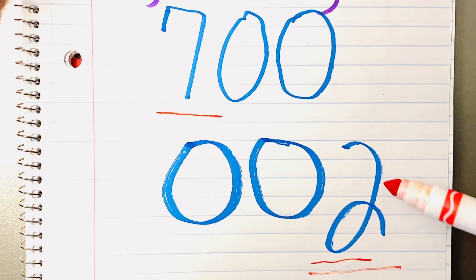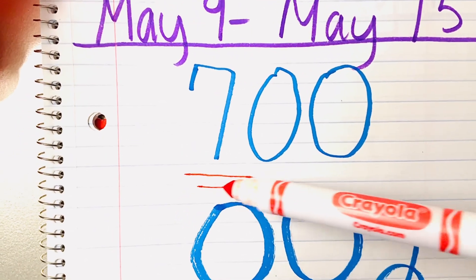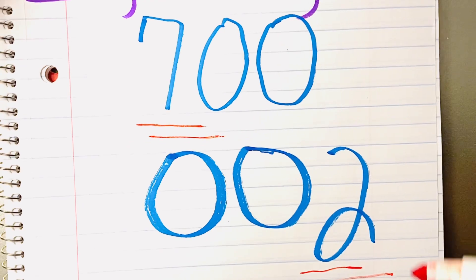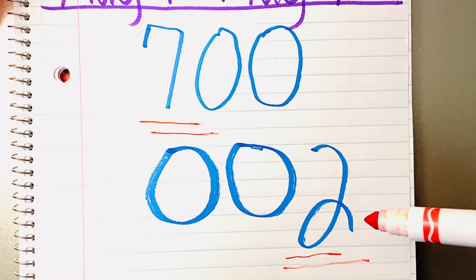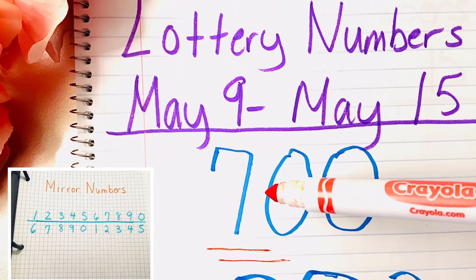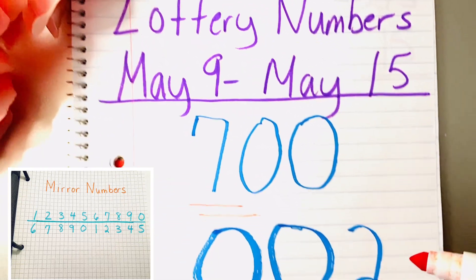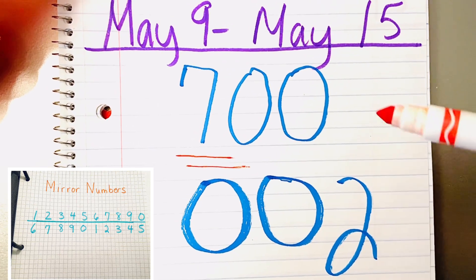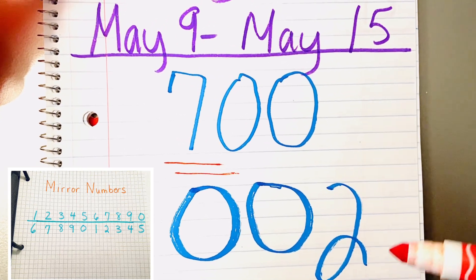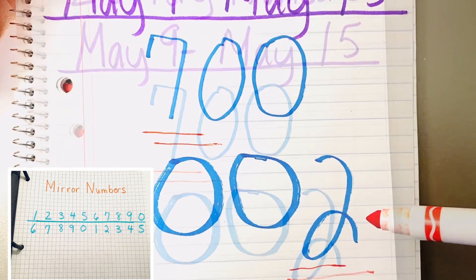And in this particular case, you see I have the 7 underlined and I have the 2 underlined. Now this is a mirror number of each other. In other words, if you play the 700, I would probably play the 002 as well, especially if you are into these mirror numbers, because as you see in the corner, the 2 equals to 7 and 7 equals to 2.